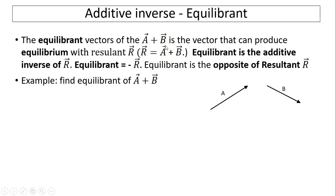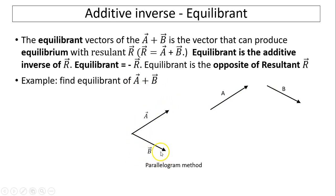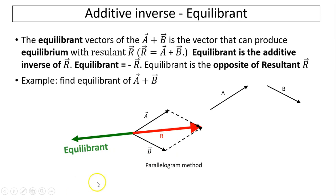Let's talk about additive inverse, or equilibrant. The equilibrant of vectors a plus b is a vector that produces equilibrium with the resultant r. What is r? r equals a plus b. So the equilibrant of a plus b is just the inverse of r — equilibrant equals negative r, the opposite of resultant r. To find the equilibrant of a plus b, you find the resultant using the parallelogram method — draw the parallelogram, here is r, and the equilibrant is just opposite of r.